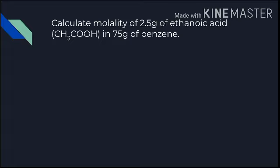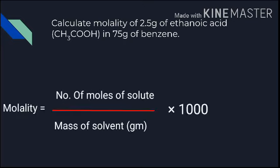Next question: calculate the molality of 2.5 grams of ethanoic acid in 75 grams of benzene. We need to calculate molality. The formula for molality is: number of moles of solute / mass of solvent in grams × 1000. Just put the values in.